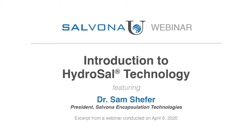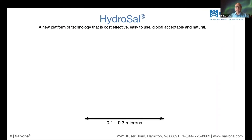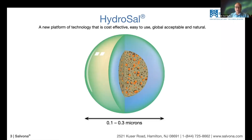Let's start with the background. What is Hydrosal? Hydrosal is a platform of technology — a very cost-effective technology that can be used globally. It is made of submicron spheres. A submicron sphere is a tiny sphere with a diameter of 0.1 to 0.3 microns, so you cannot really see it unless you're using a scanning electron microscope.